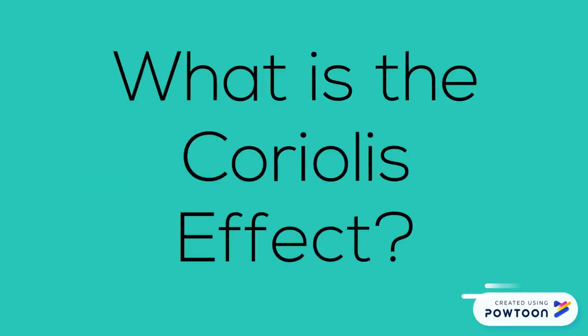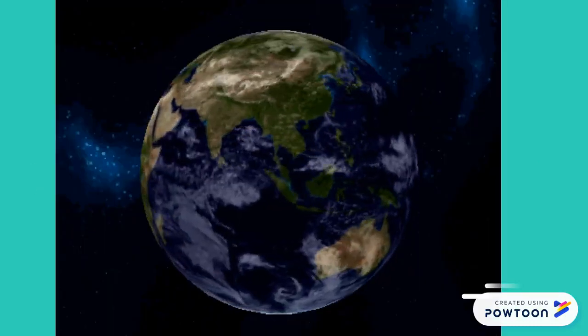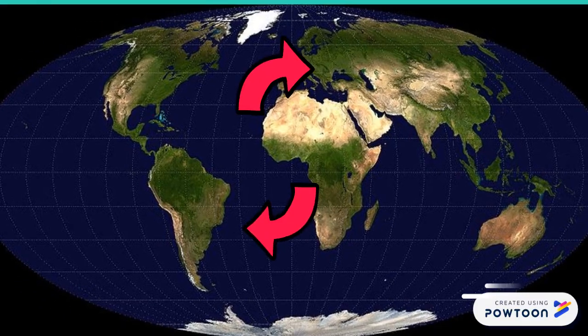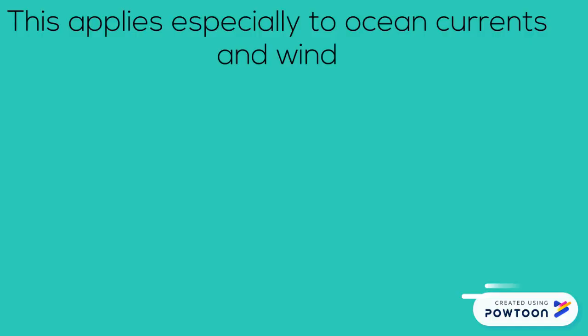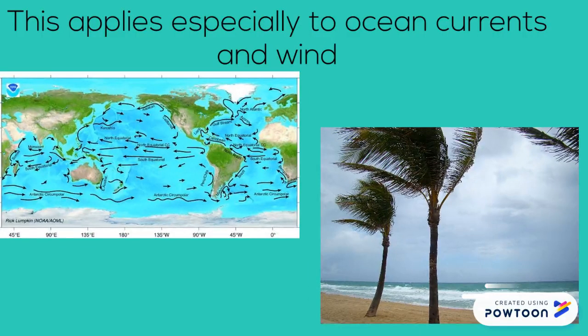Geography Minute. What is the Coriolis Effect? Due to the earth rotating, objects on the surface will tend to turn to the right in the northern hemisphere and to the left in the southern hemisphere. This applies especially to ocean currents and wind.